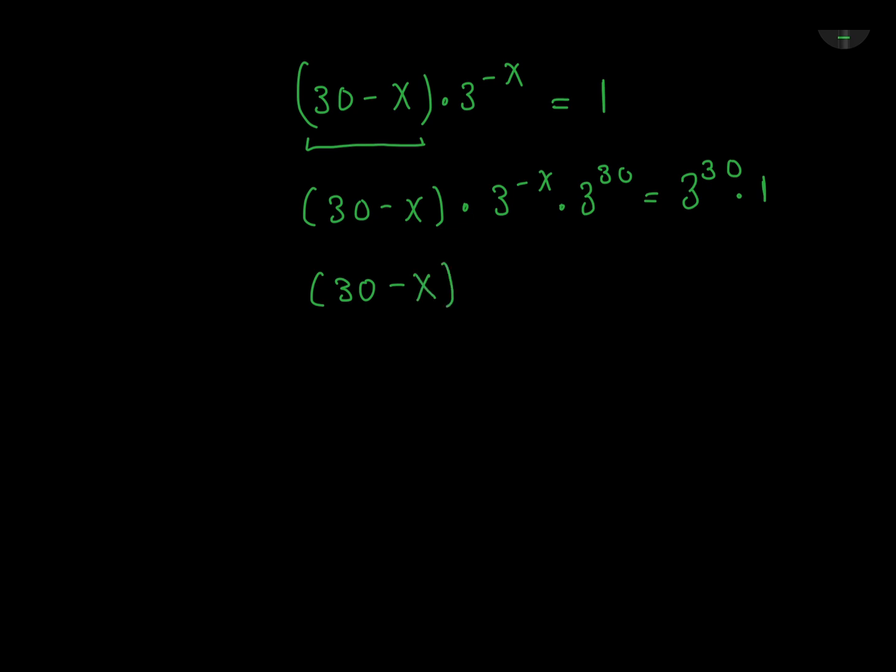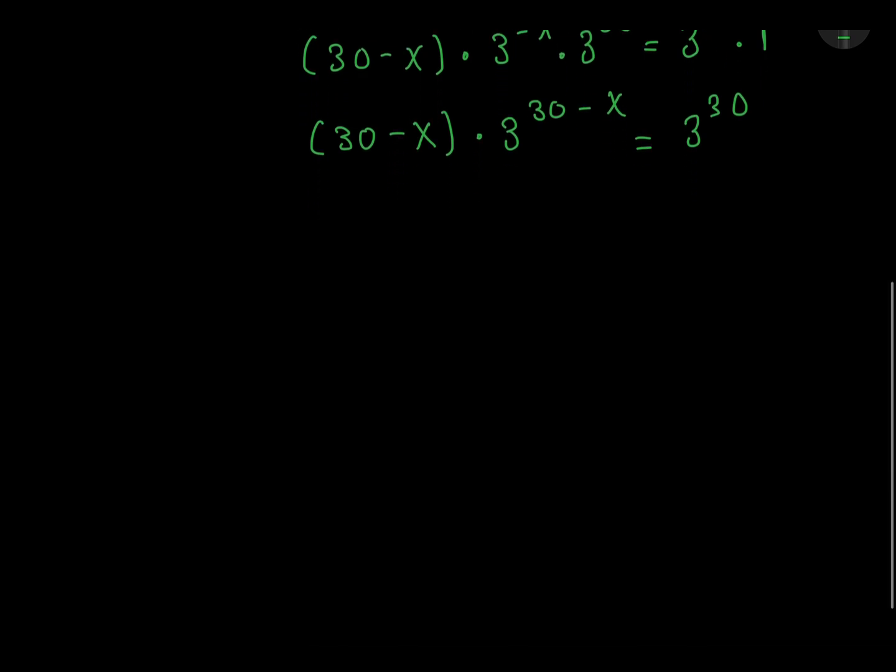Because we have the same base and we are multiplying this, we must add the exponent. So 30 plus negative x, which is 30 minus x. 3 to the power 30 times 1 is just 3 to the power 30. 1 does not change anything.